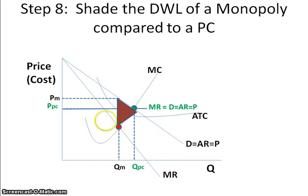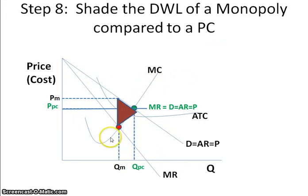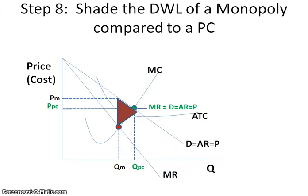As a side note, producer surplus is created because the marginal cost curve is the supply curve for the monopoly. Producer surplus is found below the price and above the supply curve, and that is how you can find it on the graph.